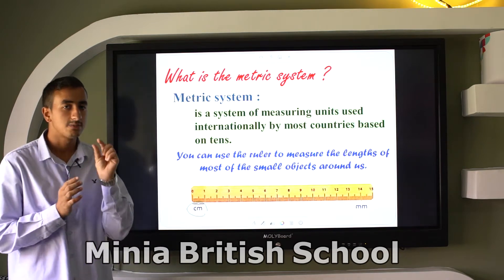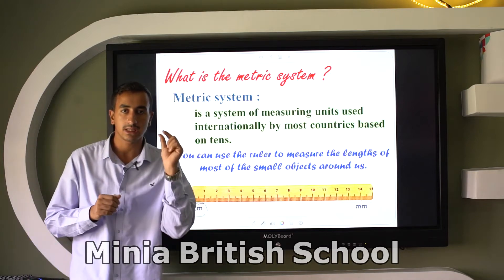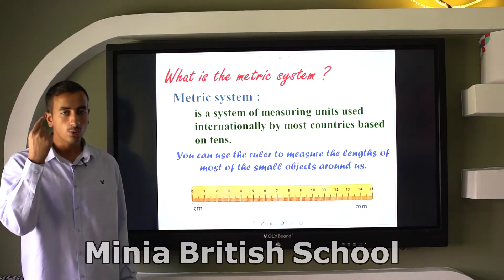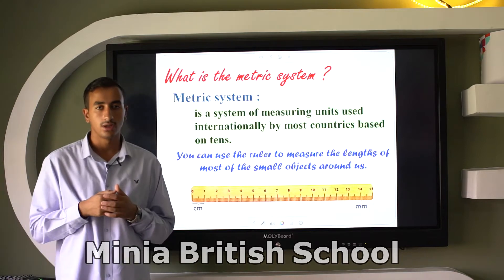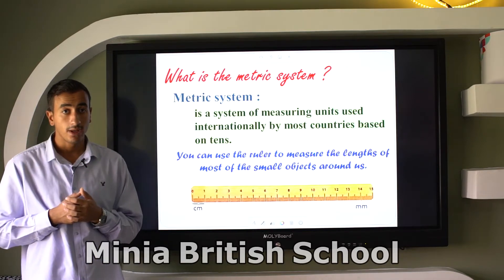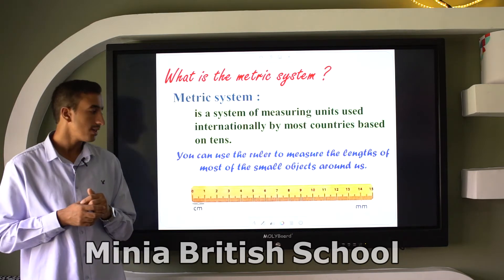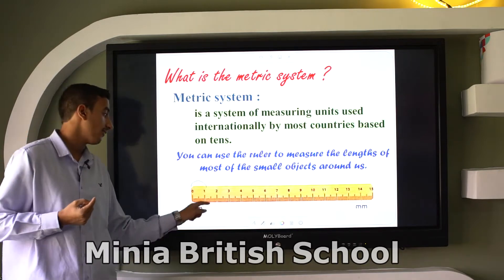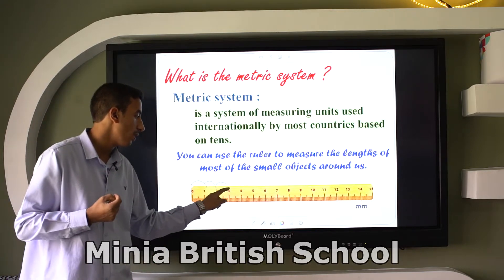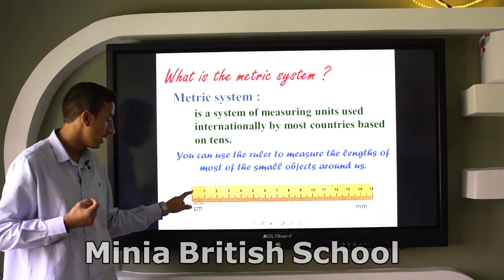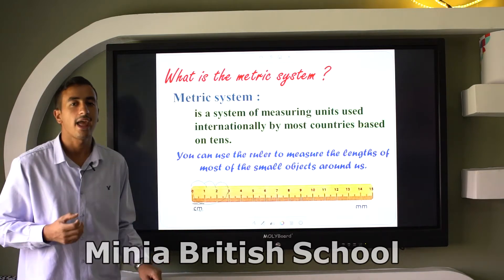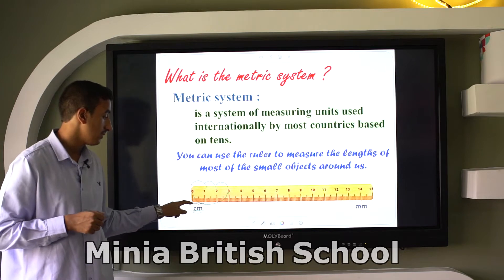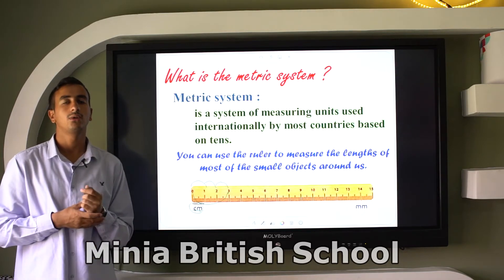Centimeter is a smaller unit — we use it to measure small objects. Between zero and one on the ruler, that is one centimeter. From zero to one is one centimeter, from one to two is one centimeter, from two to three is one centimeter. From zero to three, we have three centimeters.